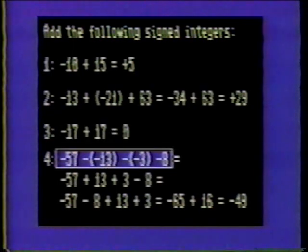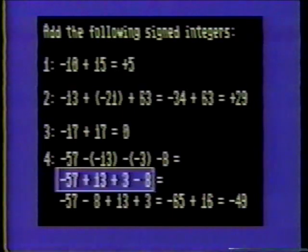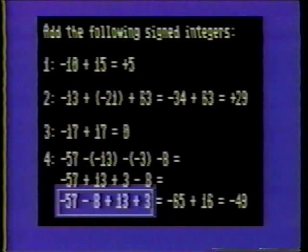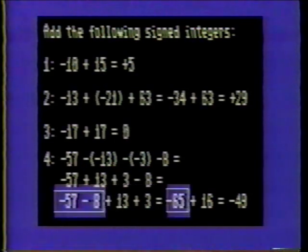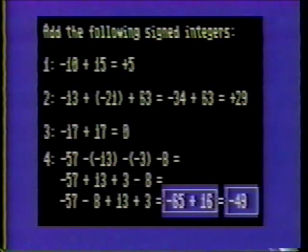Number four: negative fifty-seven minus negative thirteen minus negative three minus eight. Remember that minus and minus is a positive. Thus, minus negative thirteen and minus negative three become positive thirteen and positive three. Combine the items with like terms: we have negative fifty-seven minus eight, and positive thirteen plus three. Negative fifty-seven minus eight is negative sixty-five. Thirteen plus three is sixteen. Negative sixty-five plus sixteen is negative forty-nine.